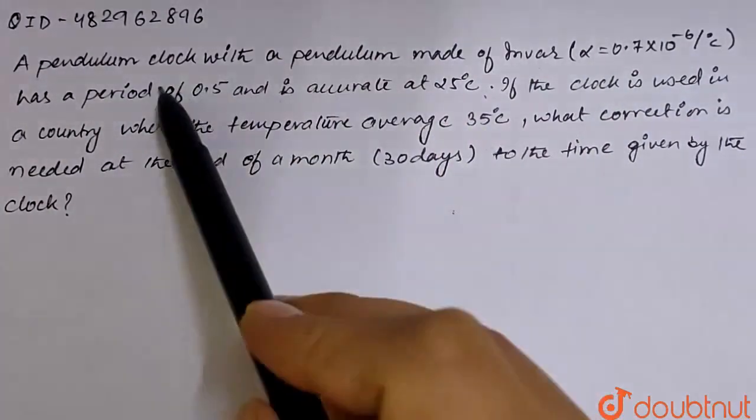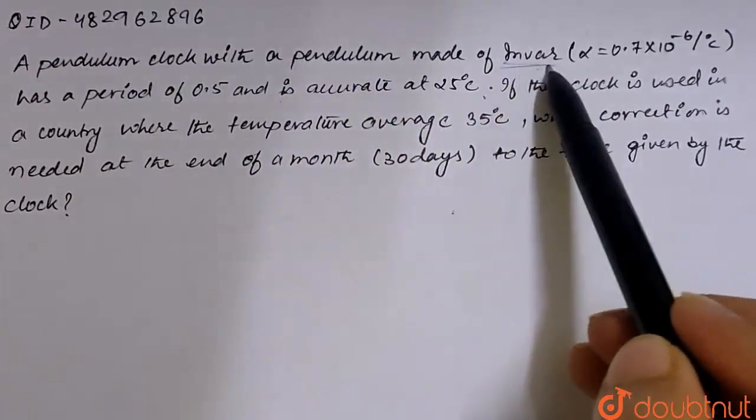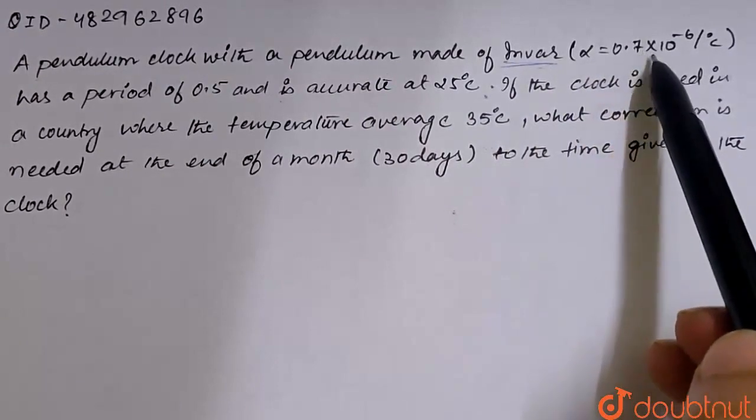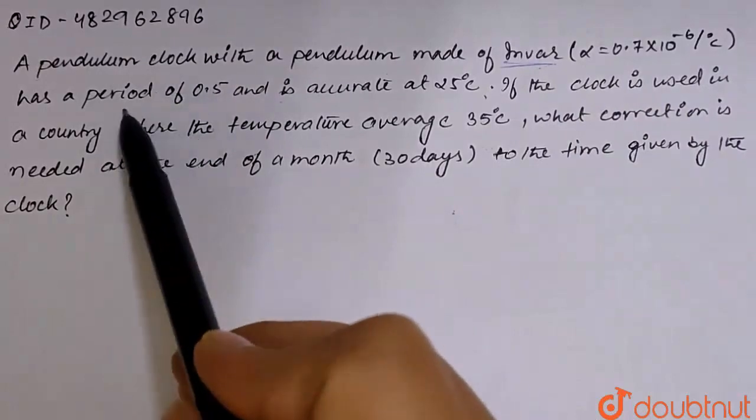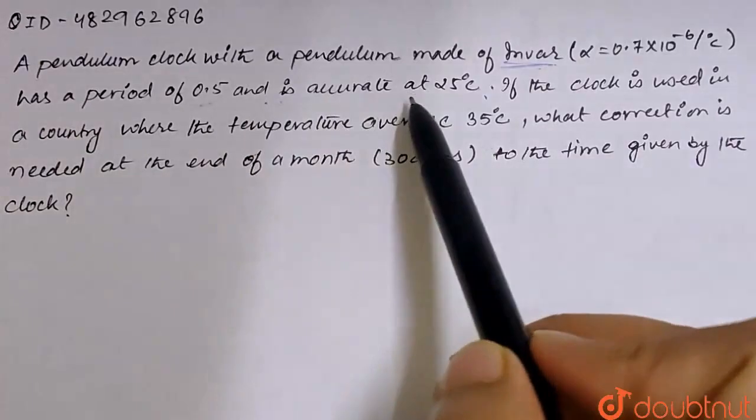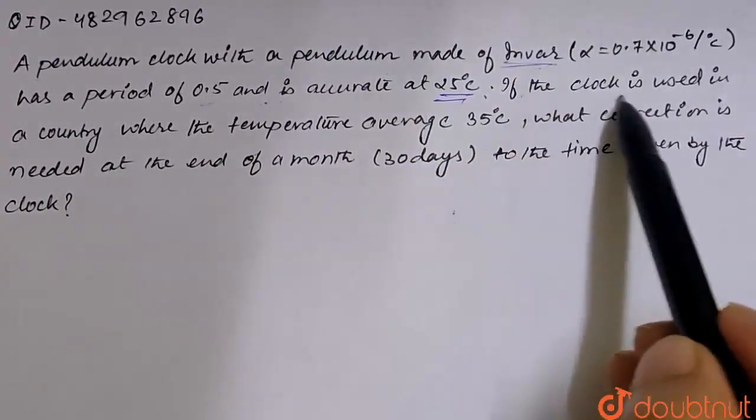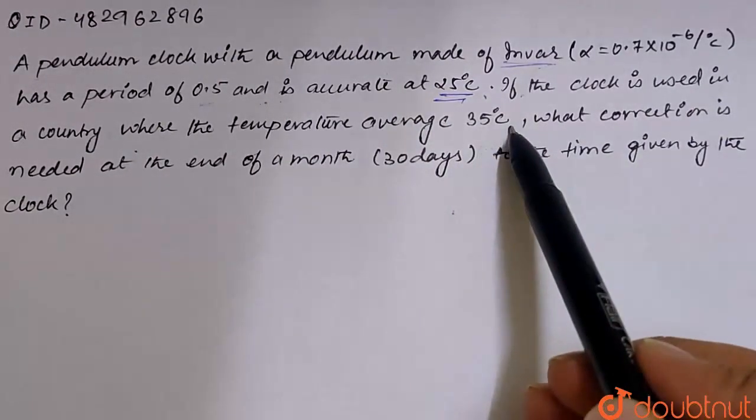It's called a pendulum clock whose pendulum is made of an invar material, which has a linear coefficient of 0.7 into 10 to the power minus 6 per degree celsius. And the pendulum clock, its time period is 0.5 seconds. And how accurate is it? 25 degrees celsius.